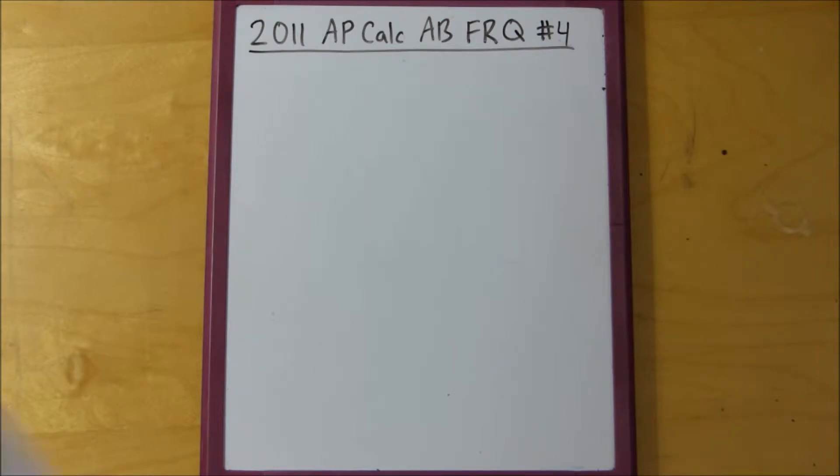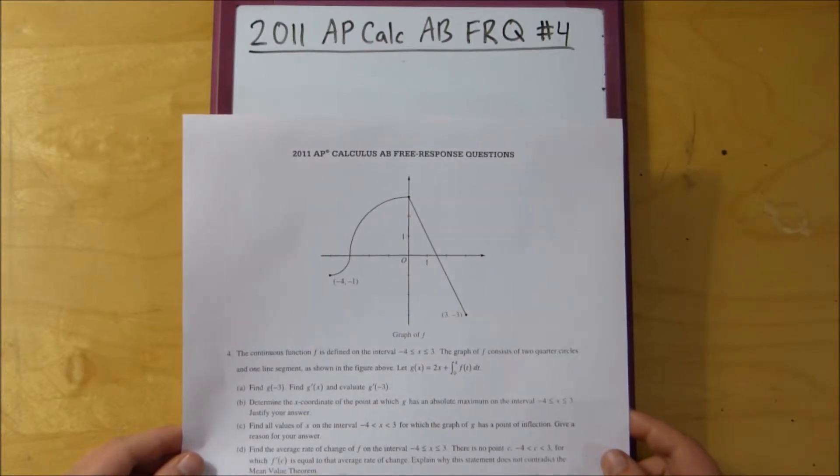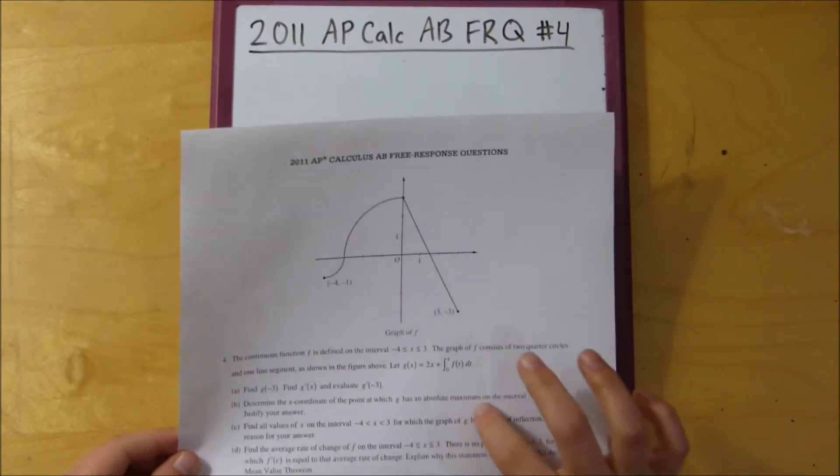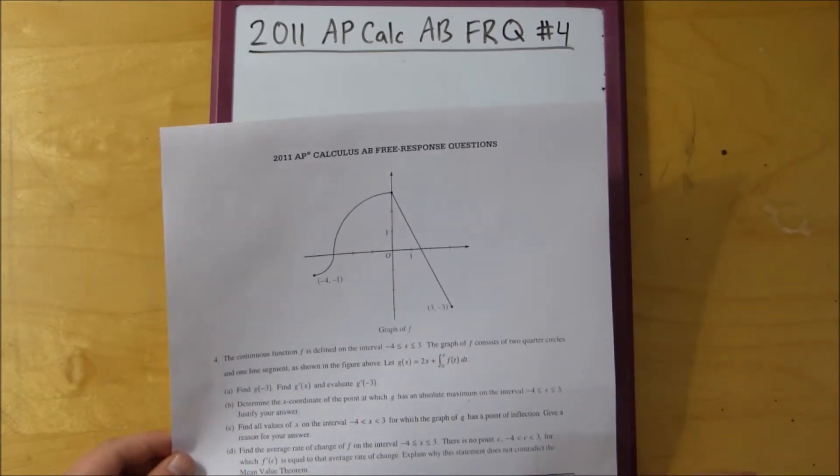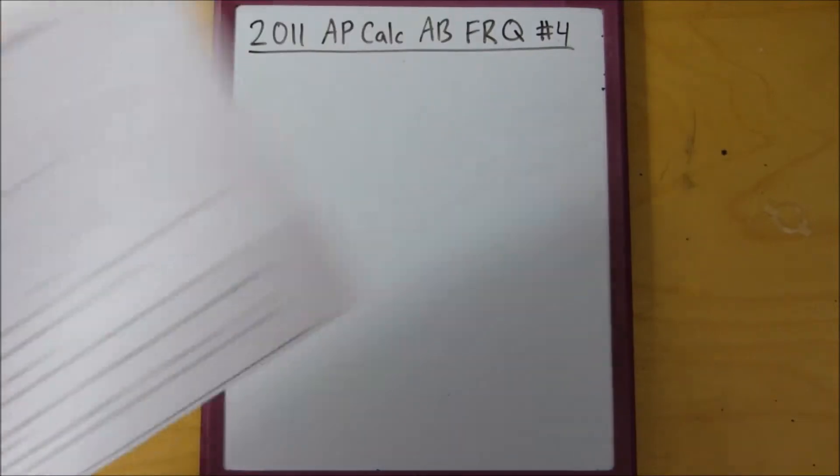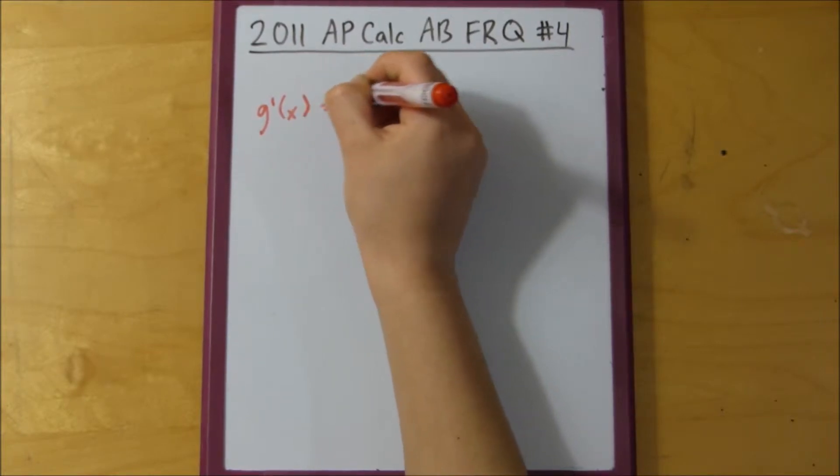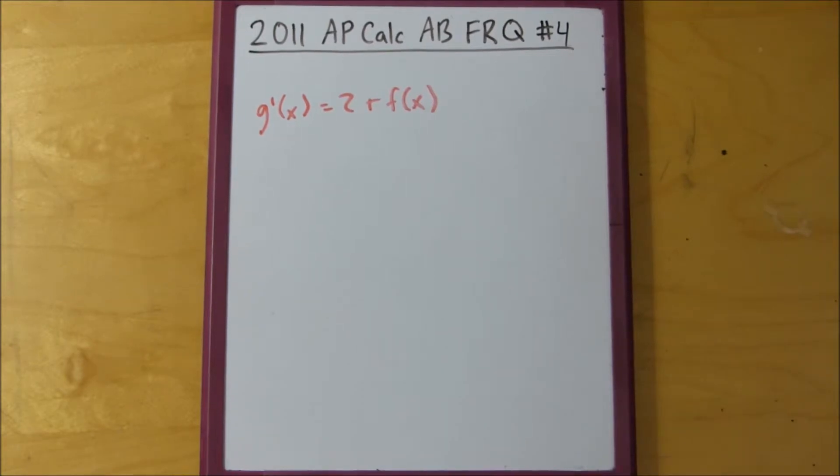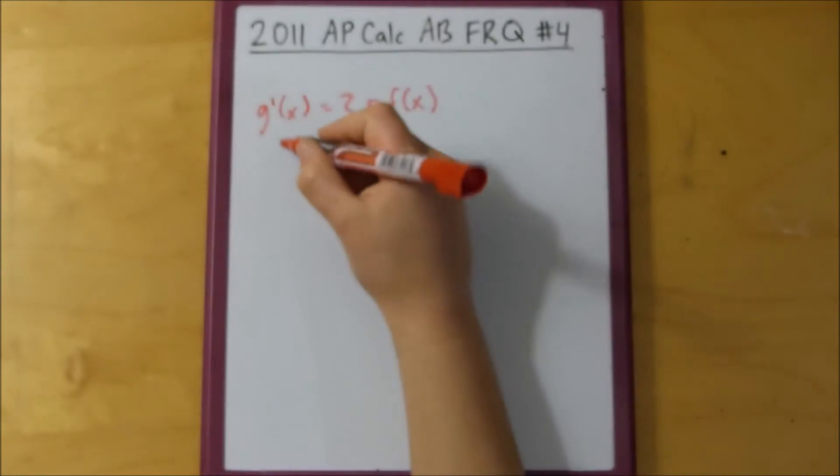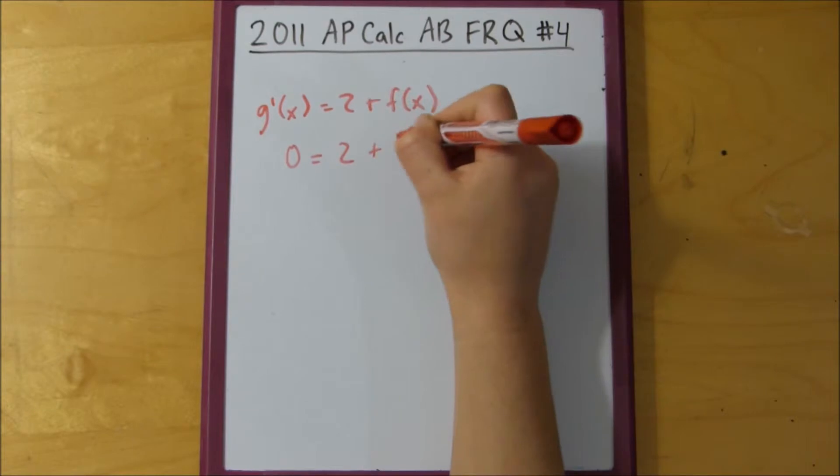And then, the next part of this problem asks to find the x-coordinate of the point where g has an absolute maximum. So, when we're talking about maximums, you want to find g prime of x, which we already found, and then you want to find where that equals 0 or it does not exist. So, like we said before, g prime of x equals 2 plus f of x. And then, we want to find where this is equal to 0. So, we set g prime of x equal to 0, so 0 equals 2 plus f of x.